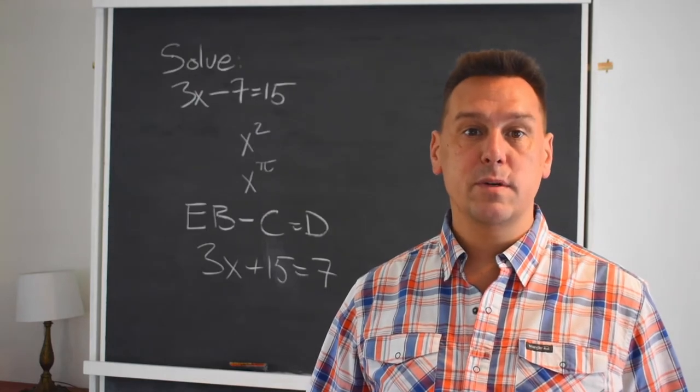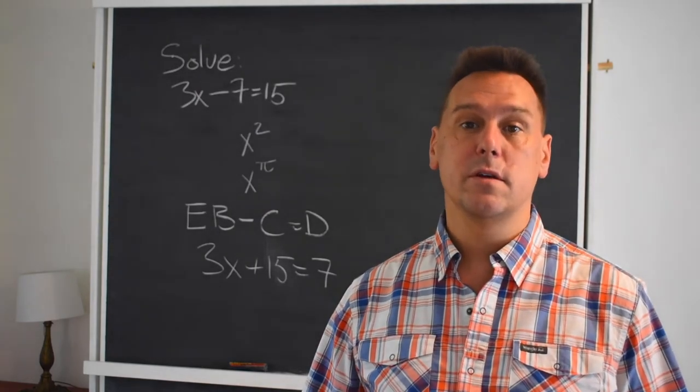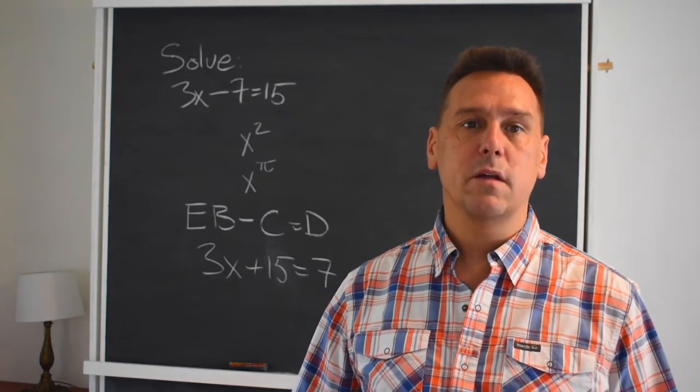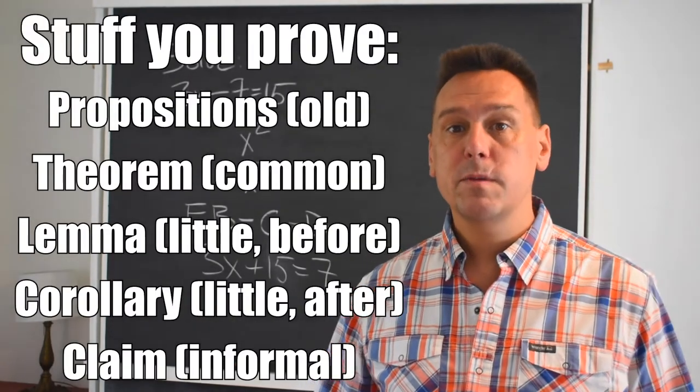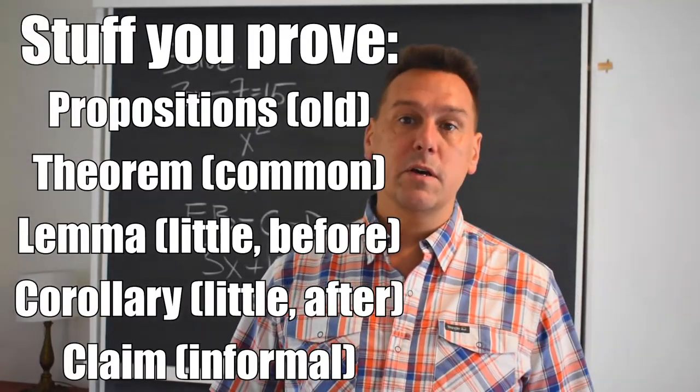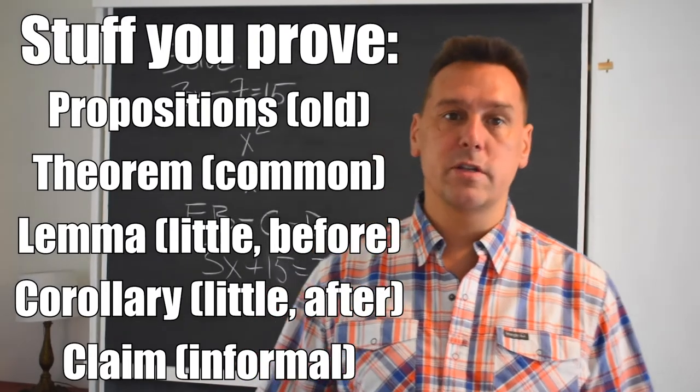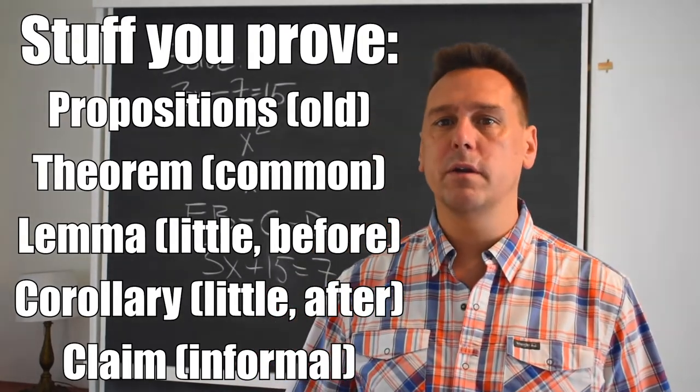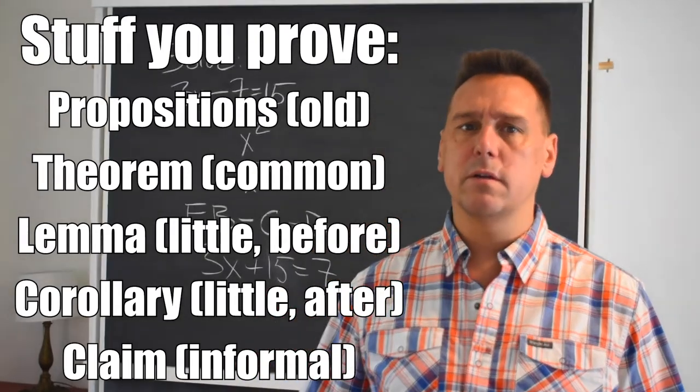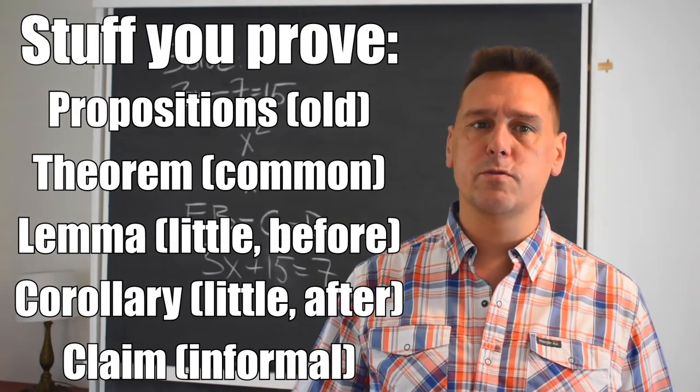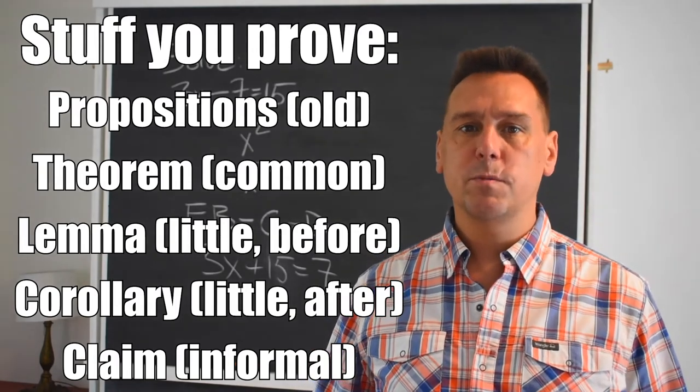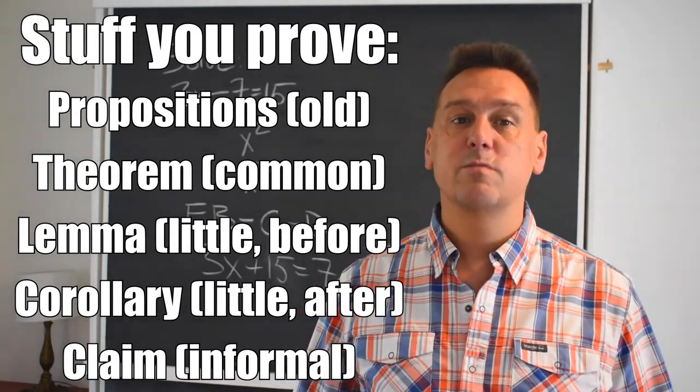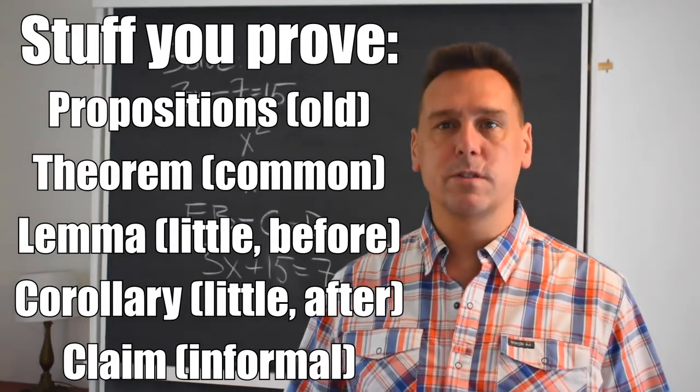By the way, these days we have lots of words for propositions. They all ultimately mean the same thing logically, stuff you prove. Theorem is probably the most common word. Lemma usually refers to a smallish theorem that comes along the way to a bigger one. Corollary kind of means the opposite, a small theorem whose truth follows from one we've already proved. No one ever told me this when I was first studying math, and I was very confused about all the different words I would see in the books.